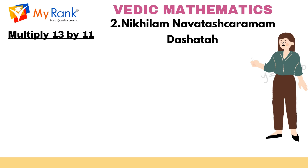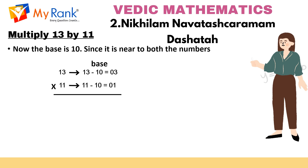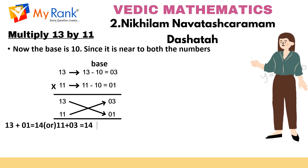Now let us see how to find the multiplication of 13 by 11. Here the base is 10 since it is near to both the numbers 13 and 11. So 13 minus base 10 equals 3, and 11 minus base 10 equals 1. Now the left hand side of the answer: we need to add the numbers crosswise, that is 3 plus 11 equals 14, and 13 plus 1 equals 14. Hence 14 is the left hand side of the answer. The right hand side is found by multiplying vertically: 3 into 1 equals 3. The combined answer is 143.